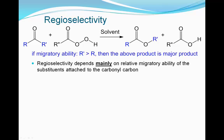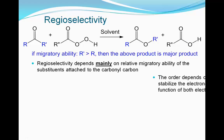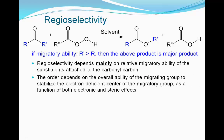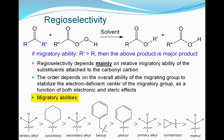The regioselectivity of the reaction depends mainly on the relative migratory ability of the substituents attached to the carbonyl carbon. The order depends on the overall ability of the migrating group to stabilize the electron-deficient center as a function of both electronic and steric effects. Relative migratory ability of substituents is: tertiary alkyl > cyclohexyl > secondary alkyl > benzyl > phenyl > primary alkyl > cyclopropyl > methyl.